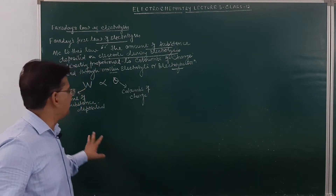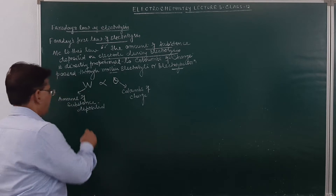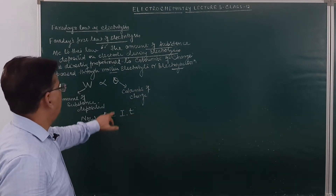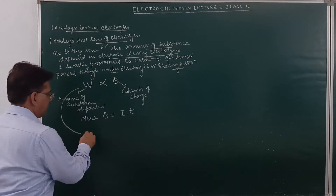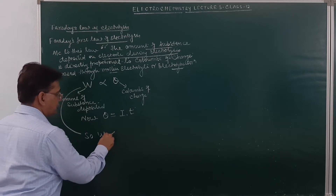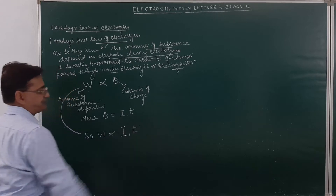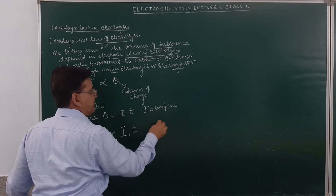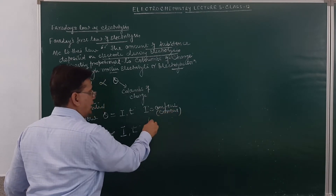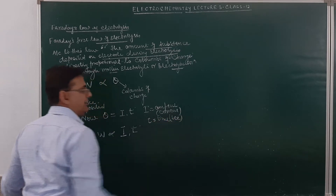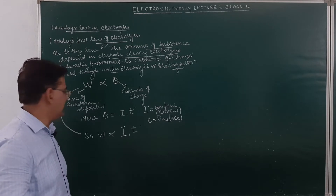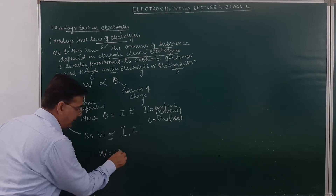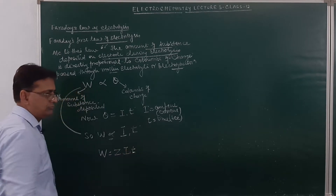The amount of substance deposited when one ampere current is passed for one second. Q = I × T. So W will be proportional to current in amperes and time in seconds. One coulomb of charge is passed when one ampere current is passed for one second. If we remove the sign of proportionality, W = Z × I × T.